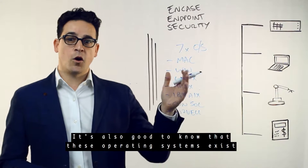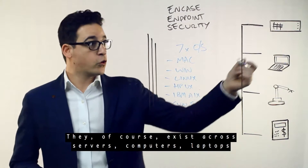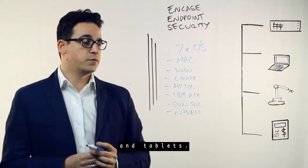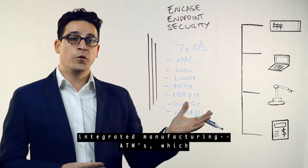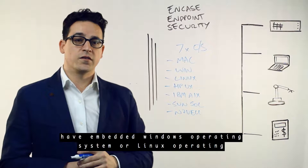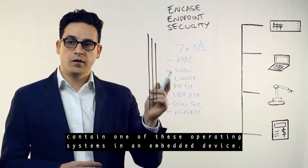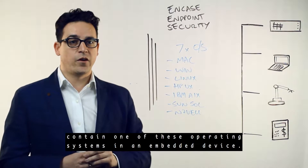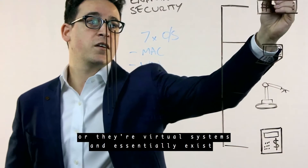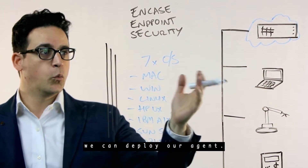These operating systems exist across several device types. They of course exist across servers, computers, laptops, and tablets, but they also exist across computer integrated manufacturing, ATMs — which have an embedded Windows or Linux operating system — and point of sales terminals, which also contain one of these operating systems. Whether they're physical or virtual systems, and essentially exist within a cloud-based repository or cloud-based resource, we can deploy our agent.